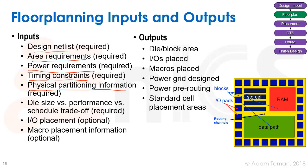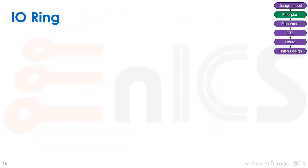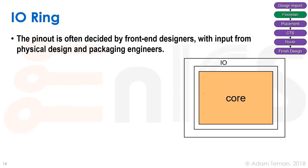The outputs of floor planning include the full area of the die or block, exact IO locations, exact macro locations, a defined power grid with pre-routed power routes, and defined standard cell placement areas. At this point the design is ready for standard cell placement and we can apply placement algorithms, which we'll discuss in the next lecture.